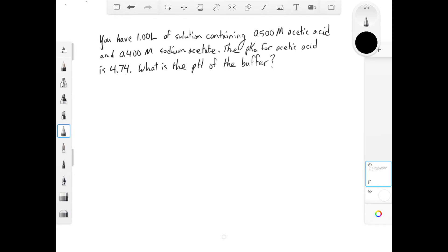The question gives you the pKa for acetic acid, 4.74, and asks what is the pH of the buffer. Again, this is something we've done already, and we can use either an ICE table or the Henderson-Hasselbalch equation.